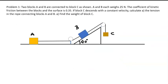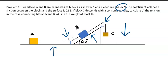So let's get started. In this problem, there are three bodies: A, B, and C. Blocks A and B are connected to C, as shown. There are two pulleys, one and two. A and B each weigh 25 newtons. The coefficient of kinetic friction between the blocks and the surface is 0.35, so there is friction here and also friction there. C descends with a constant velocity, meaning the acceleration of the system is zero. We want to calculate the tension in the rope connecting A and B, and also the weight of block C.